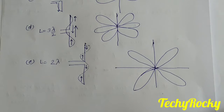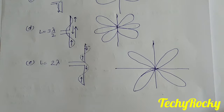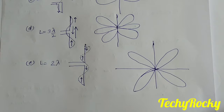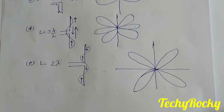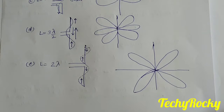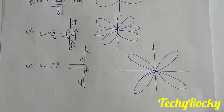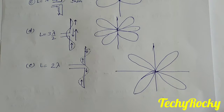If you further increase the antenna length to 3 lambda by 2 and then to 2 lambda, you can see the wave travels one and a half cycles for 3 lambda by 2, and two cycles for 2 lambda. Accordingly, the pattern changes — three lobes on each side for 2 lambda, and two lobes on each side of the y-axis for the other case.